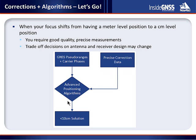Achieving centimeter-level precision starts with good quality precise measurements, requiring careful trade-off decisions on antenna and receiver design. If you previously chose hardware that was 'good enough,' you may need to make changes when chasing higher precision. Or you might face pressure to reduce the size or cost of your system, requiring careful evaluation of what can be traded off and what cannot to ensure a sub-10-centimeter solution.